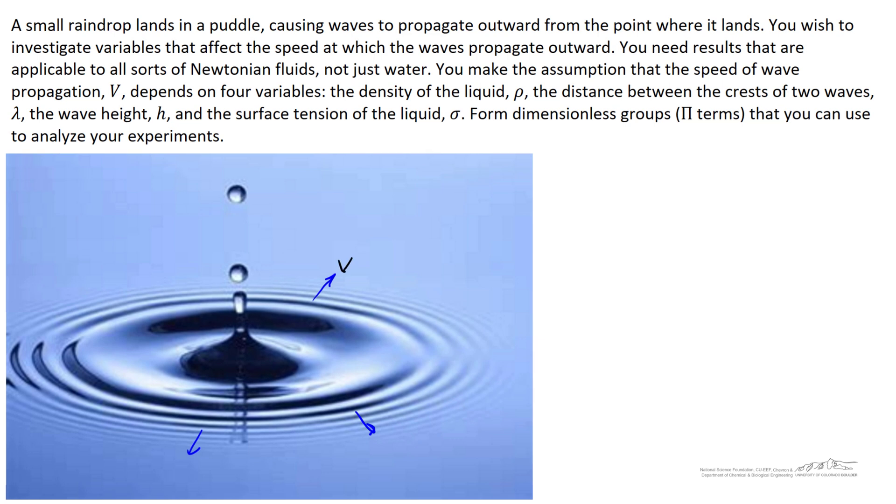In your research, you want to investigate variables that affect this speed, and you need results that are applicable to all sorts of Newtonian fluids, not just water itself. You start this work by making the assumption that the speed of the wave depends on four different variables.